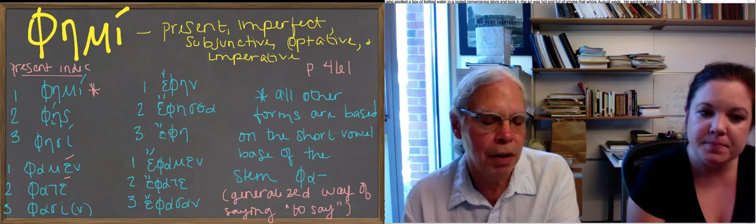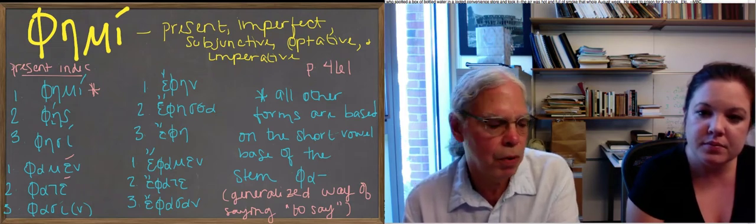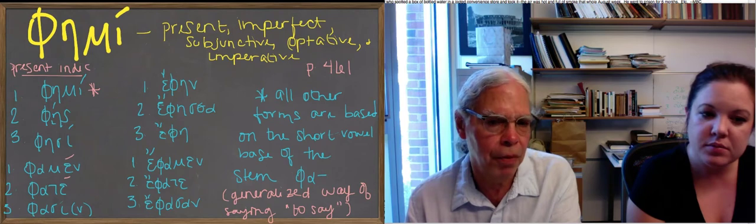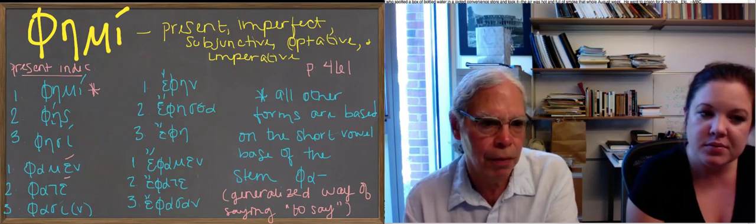And the way they're formed, that is, you have a root, which can be, in order that it alternates between a long vowel form, fe, with an eta, and a short vowel form, fa.